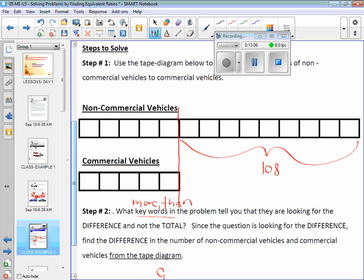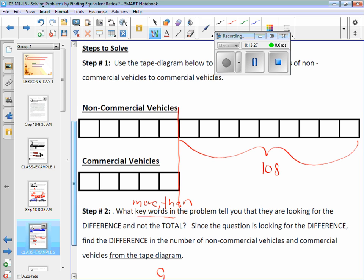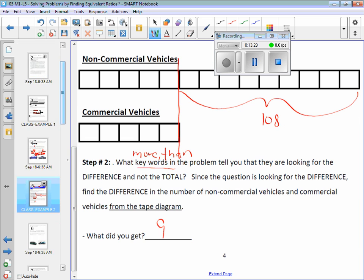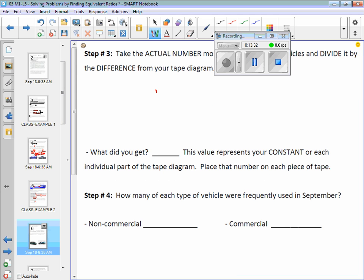These nine boxes represent 108 more vehicles. Think about it. You've got to take these nine boxes and figure out how much each is worth. You've got to take our 108 and divvy it up equally nine ways. What operation? Division. So let's do that. You're going to do nine into 108. Do that and it should come out to a nice even number.